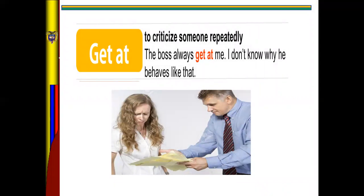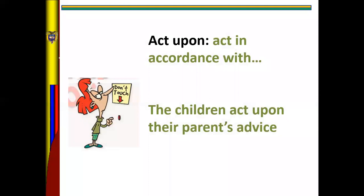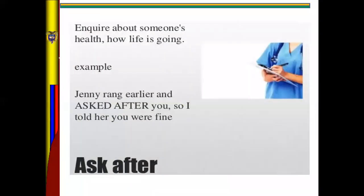Next: get at — the meaning is to criticize someone frequently. For example, 'He was always getting at me, I don't know why he'd say that.' Next: act upon — that means in accordance with. For example, 'The children acted upon their parents' advice.'